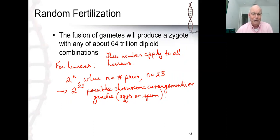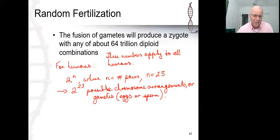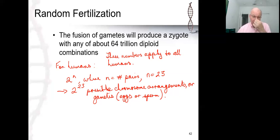Unless you have an identical twin, your combination of genes on your chromosomes is different from anyone else's. And in fact, this further illustrates the power of sexual reproduction.